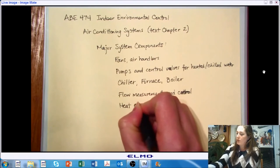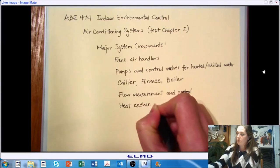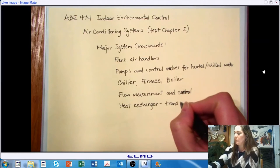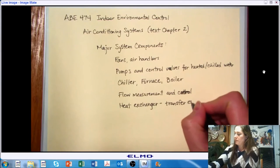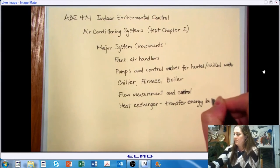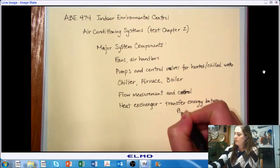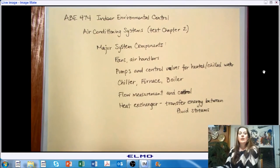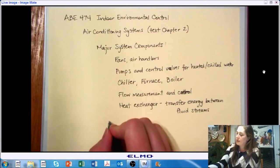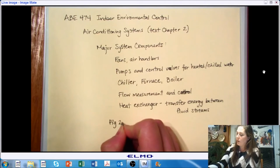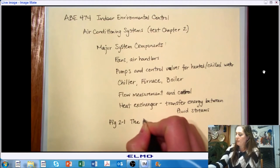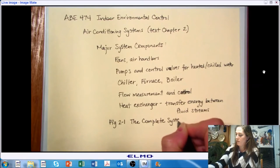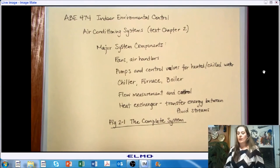And then we need some form of heat exchanger to actually heat and cool the air that we're supplying to our space, so that we can transfer energy between two fluid streams. And we're going to take a look in just a few minutes. And within your text in chapter two, we're going to look at figure 2-1, which is titled The Complete System. So let's go ahead and take a look at that right now.